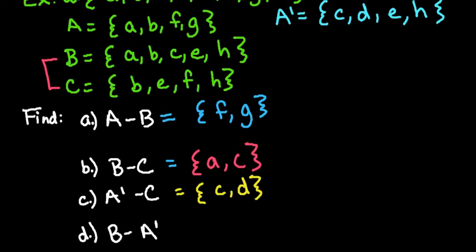All right, so our last one we're going to look at is B minus A naught. So we're looking at this set right here, B, and we're looking at this set here. And we're going to look for what's left in B that is not also in A naught.